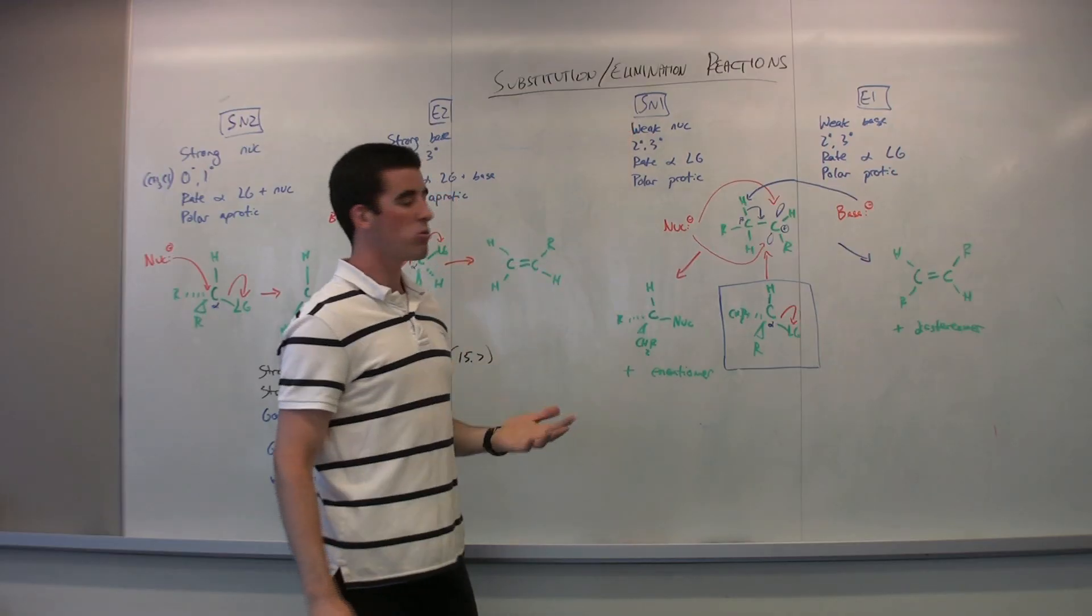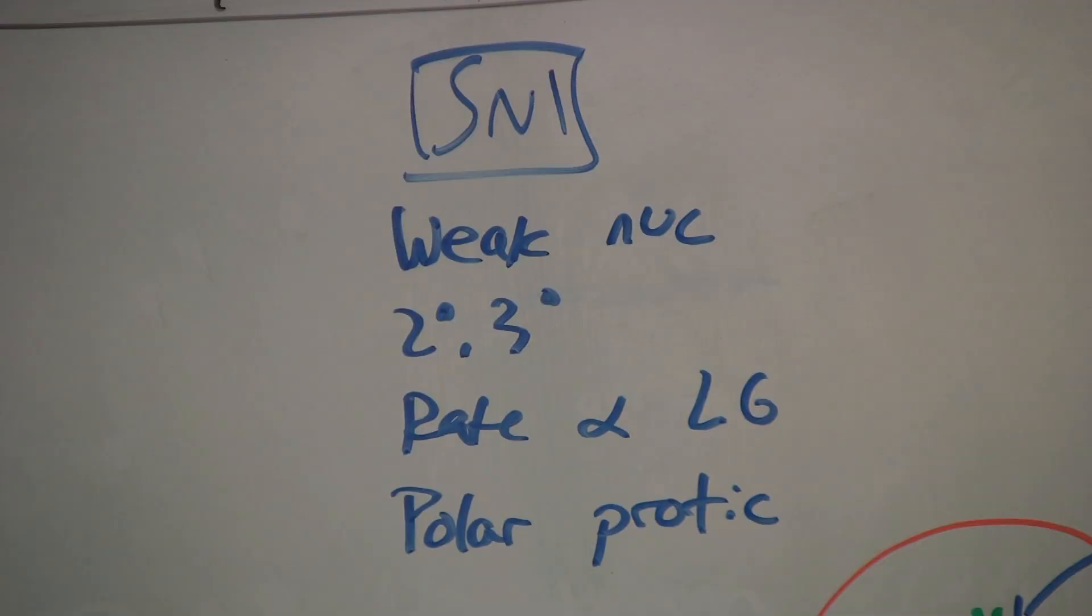So what are the characteristics of SN1? We have a weak nucleophile. We know that because the leaving group has to leave. We have secondary tertiary carbons. The rate is only dependent on one thing now, and that is just the leaving group. And we want a polar protic solvent.